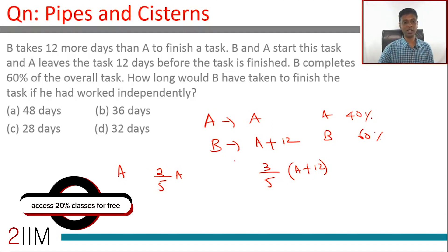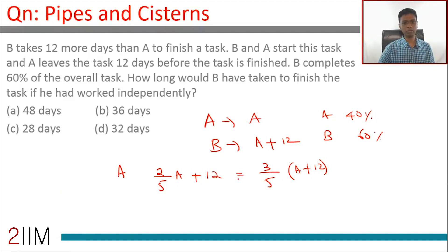But the key point here is A leaves the task 12 days before the task is finished, or the number of days A works plus 12 is the number of days B works. A very simple idea: B works for 12 more days than A. In the days that A works, A finishes 40% of the task. In the days that B works, B finishes 60%. Link these two up, then we are through.